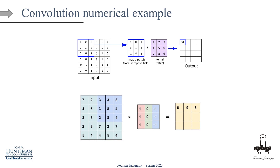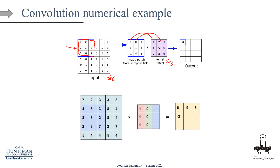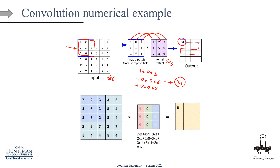Here's a numerical example of the convolutional operation. We have a 6 by 6 input of original pixel values. CNN does local feature extraction, focusing on a patch and sliding it over the entire image. With a 3 by 3 filter, we take the first 3 by 3 patch, perform element-wise multiplication, and sum all values: 1 plus 0 plus 3 plus 0 plus 5 plus 6 plus 7 plus 0 plus 9 equals 31. We repeat this for the entire image to get the feature map.